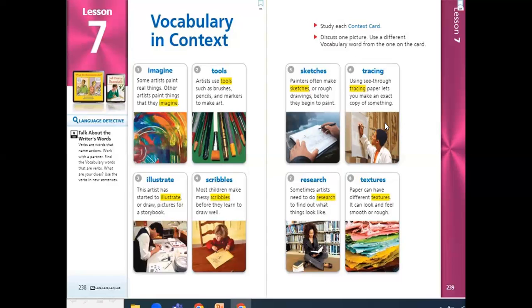If you remember yourself in kindergarten or preschool, you couldn't even hold your pencil, so you should trace or follow the points to write a letter, for example. This is the meaning of tracing. Research. If you don't know something, for example, or you need to increase your information about something, you can search on the internet or make a research, do a research. So sometimes artists need to do research to find out what things look like.